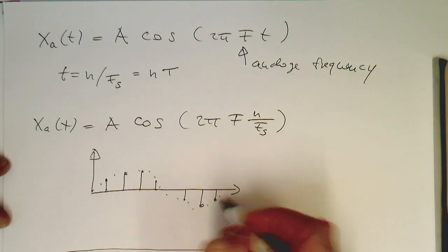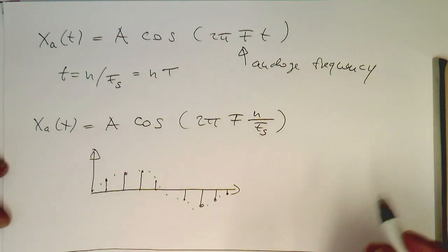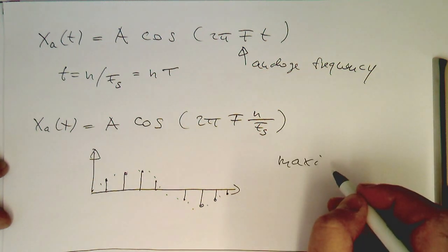So instead of having a continuous function, I just draw this here as a dotted line, we are getting points like this here out there.